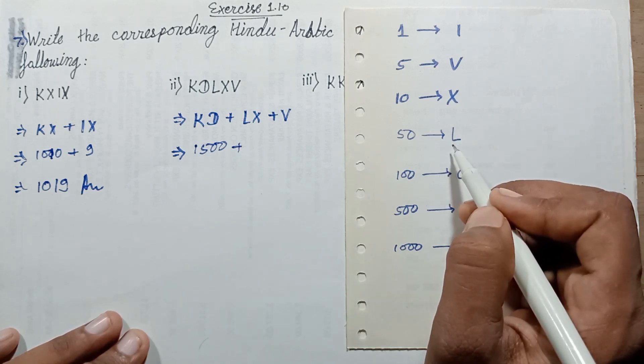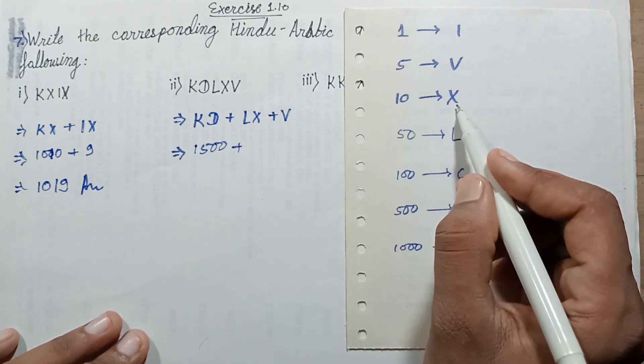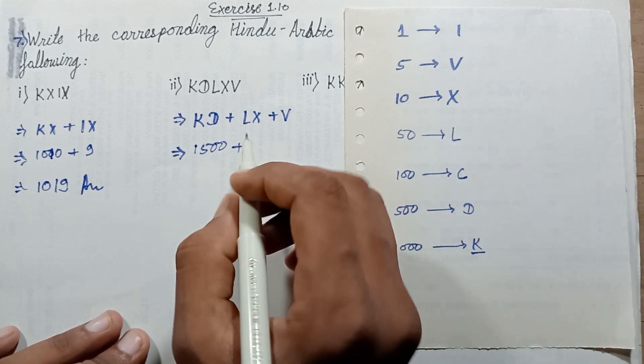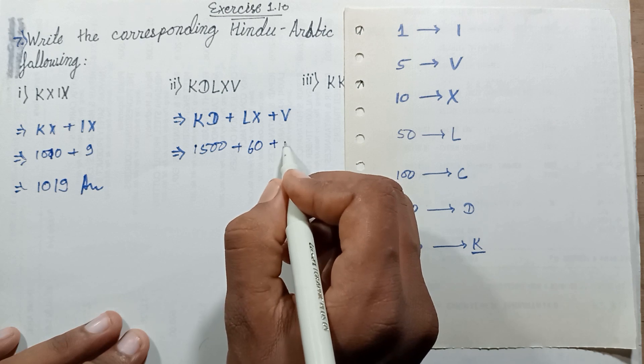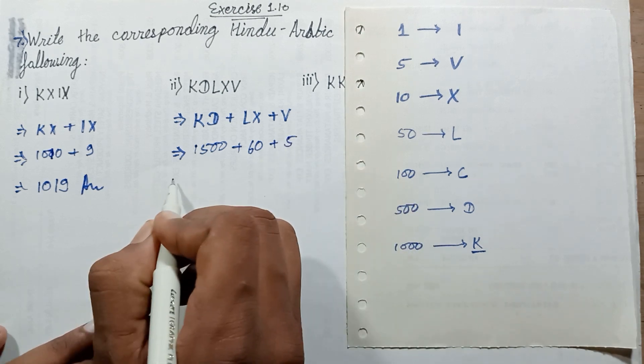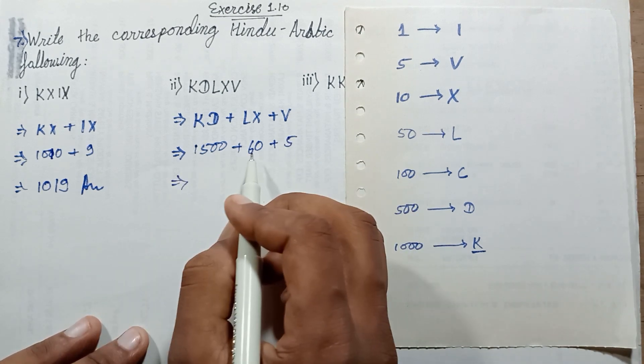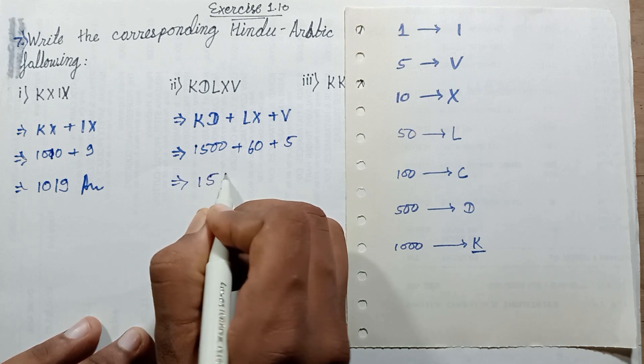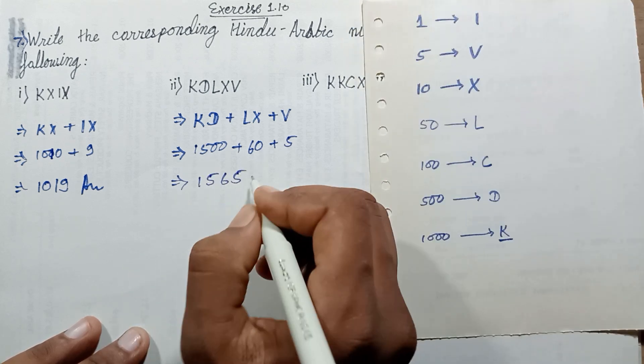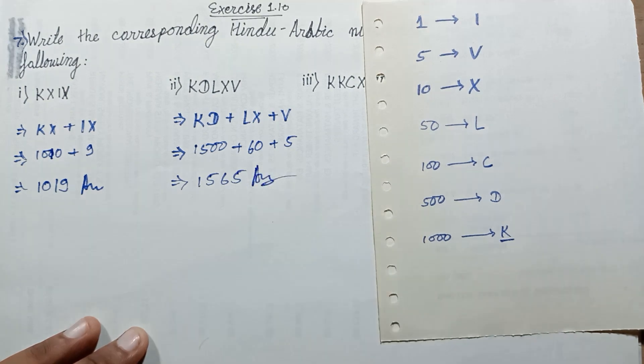Plus V represents five. Add them up, this number 1565. This is Hindu-Arabic numerals form.